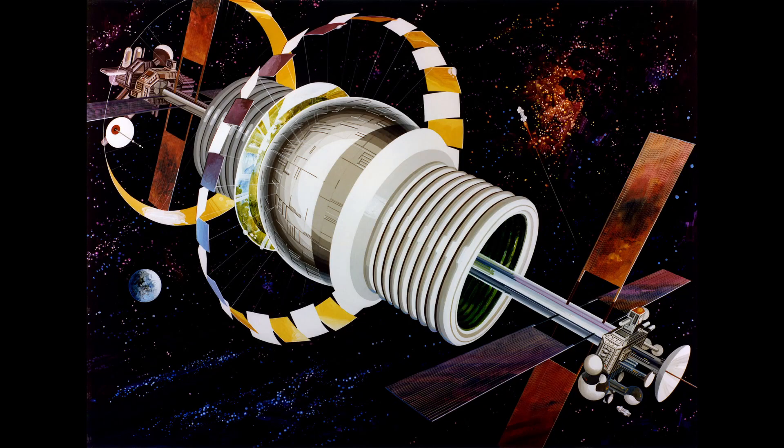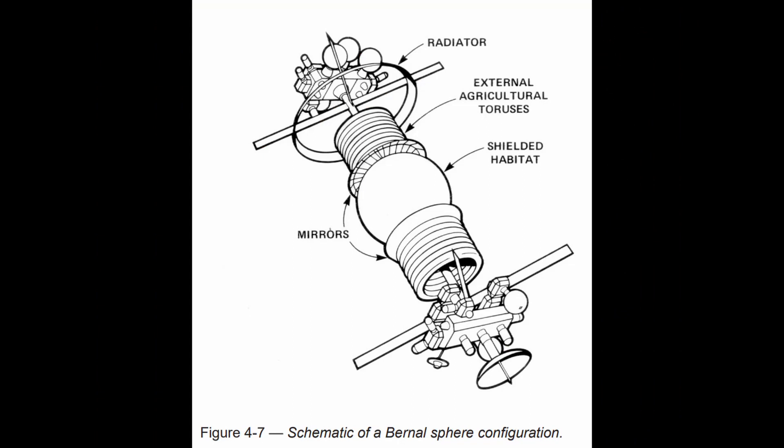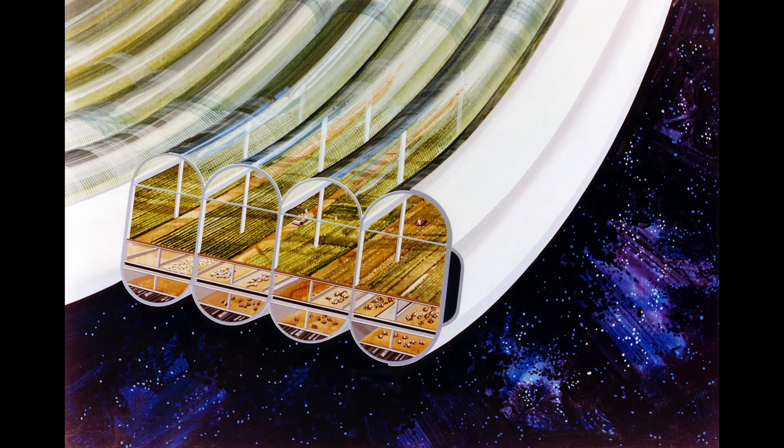So next up is a Bernal sphere. You can kind of see the rectangular mirrors around the outside. Those are primary mirrors reflecting sunlight to those conical ones on either end of the sphere which brings the sunlight on the inside. And then on either end you see the banded toruses that we were looking at earlier. And with this design that's where the farms are located.